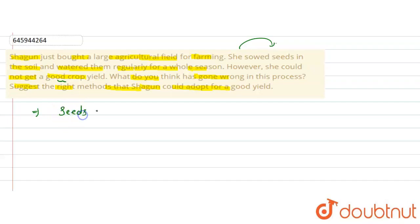First of all, the seeds might not be viable. The seed quality may not be good, which is why the crop yield is affected.